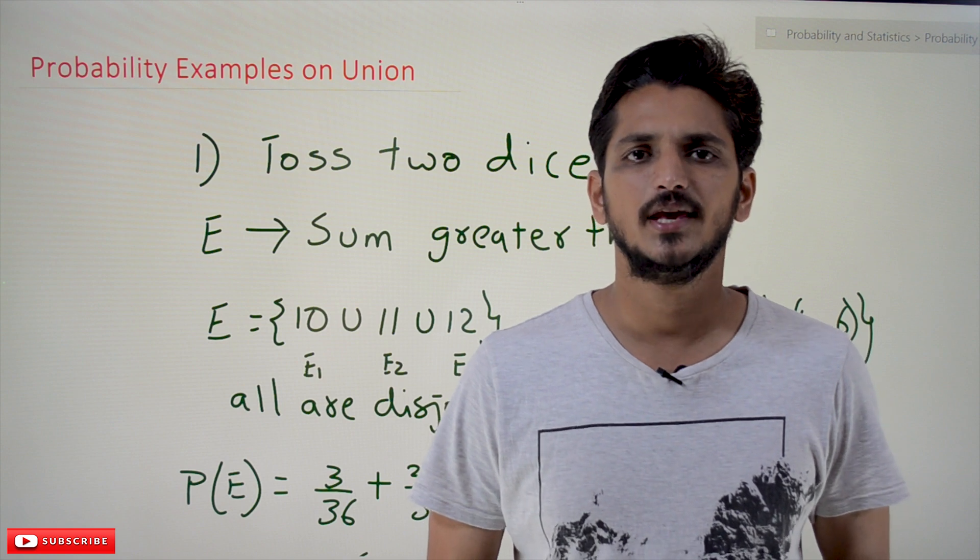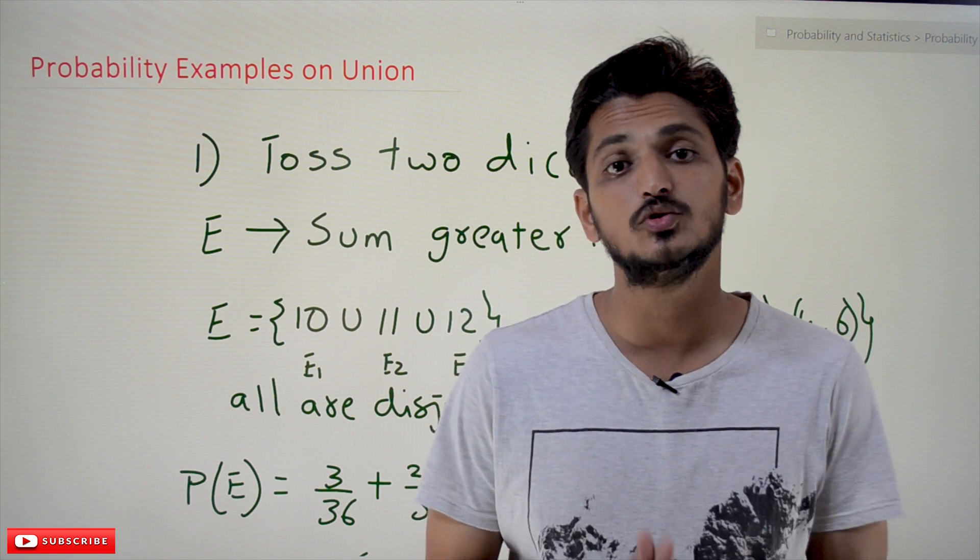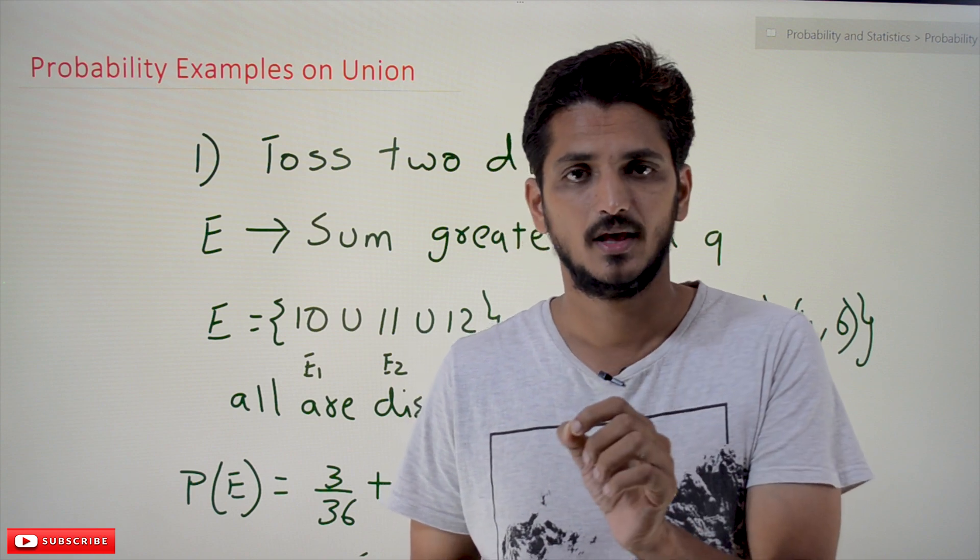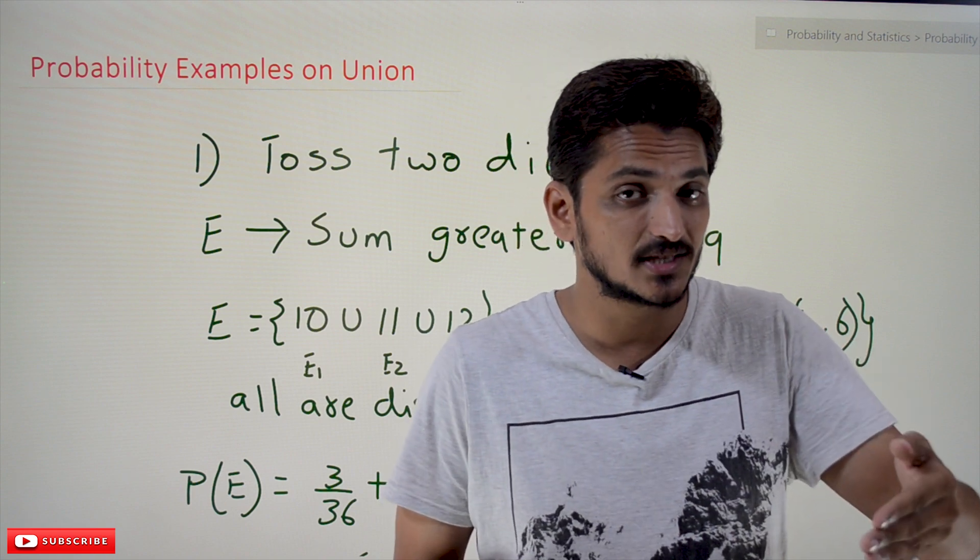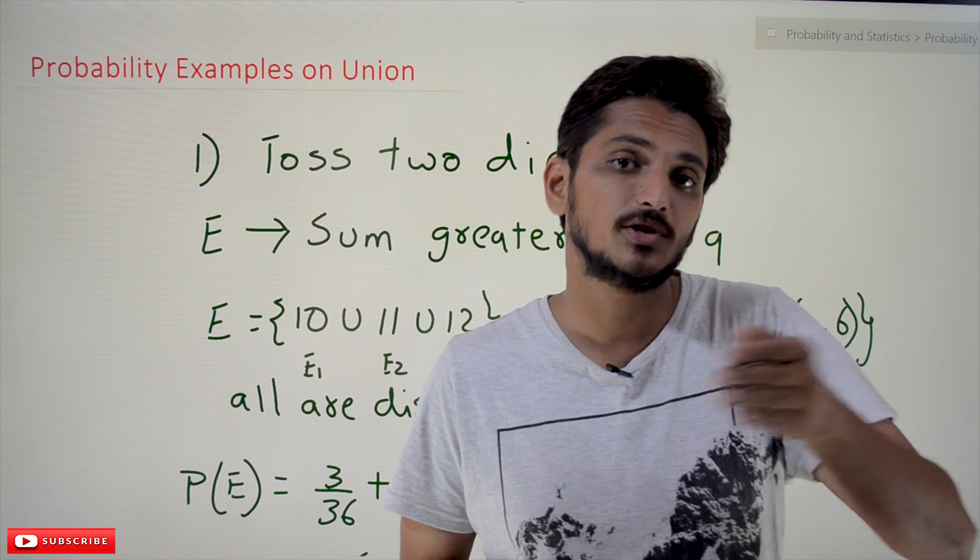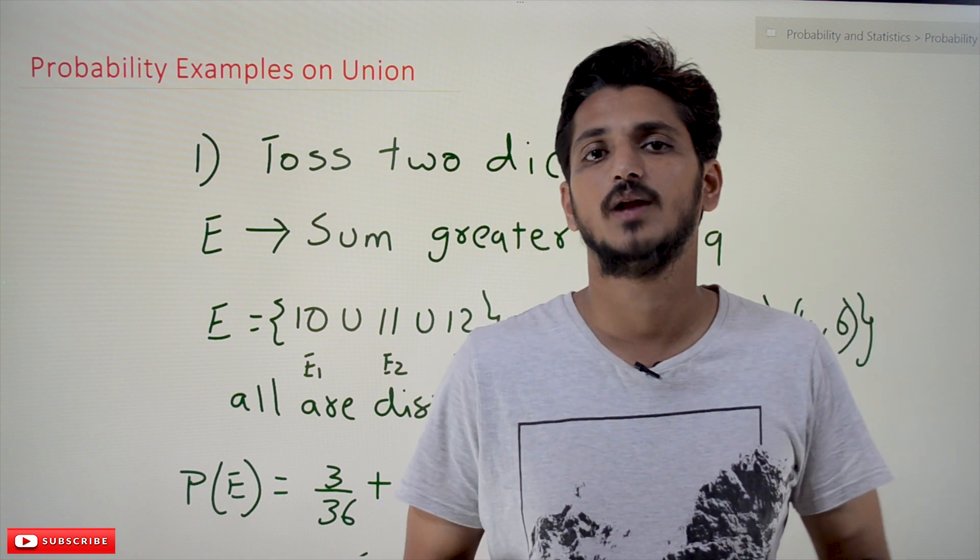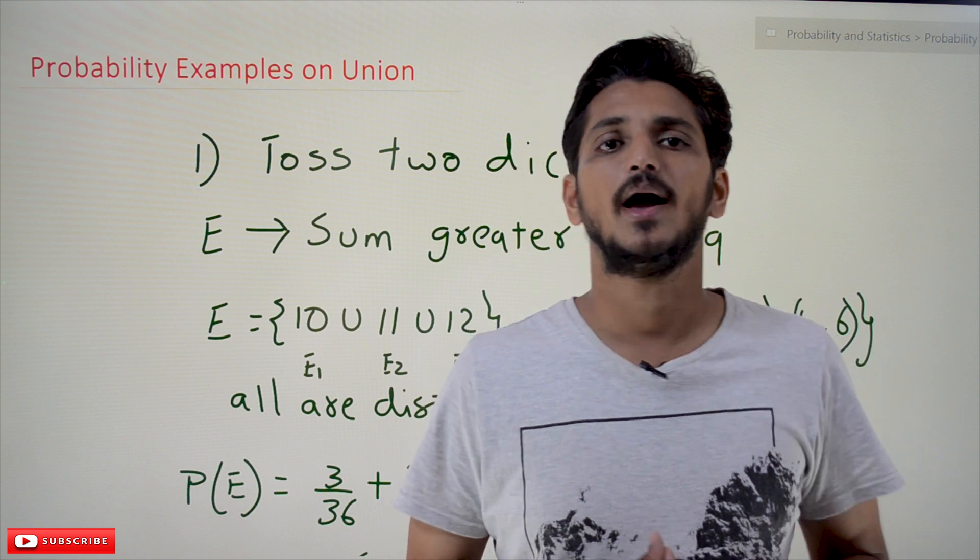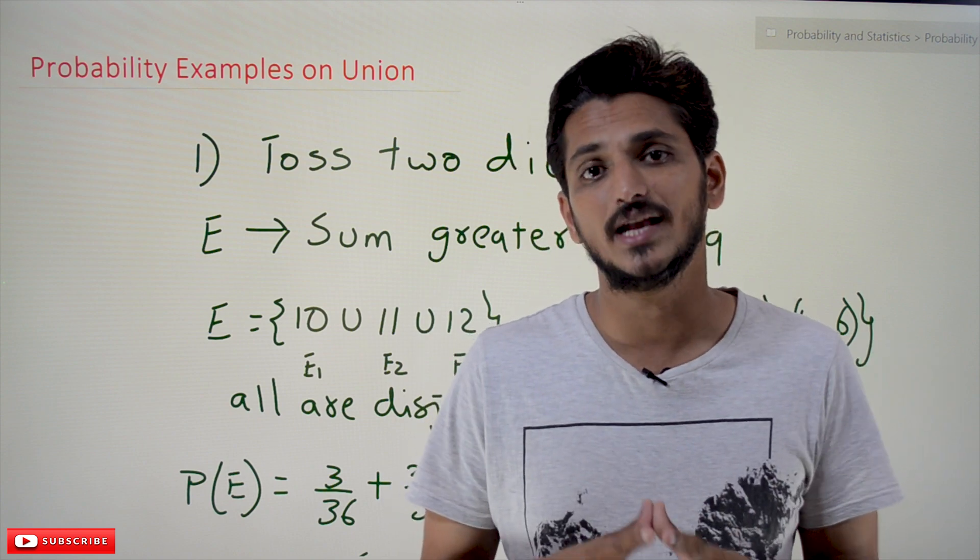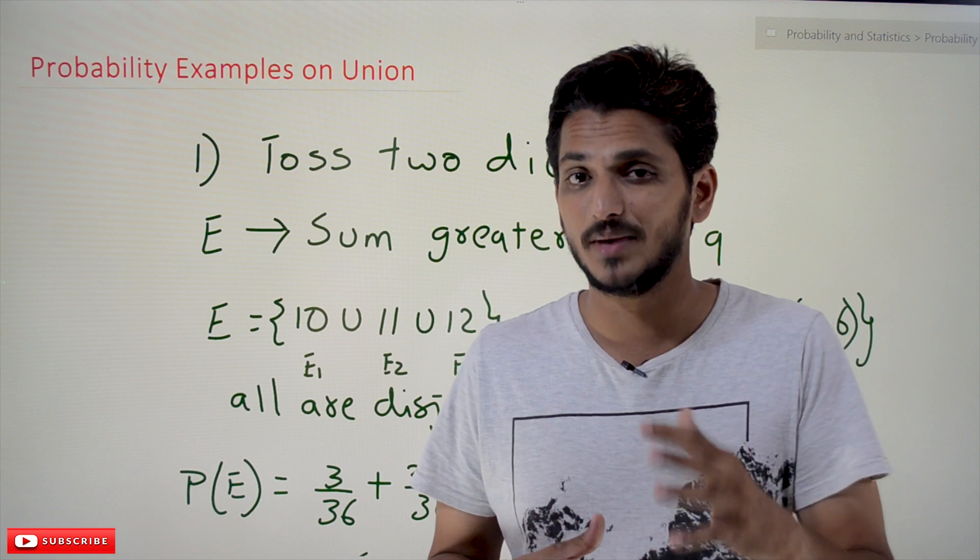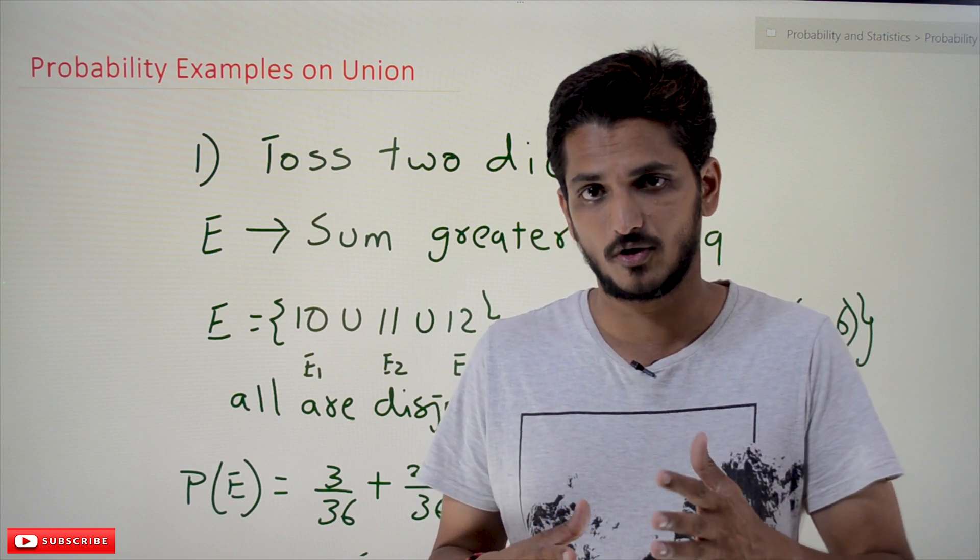Hi, welcome to Learning Monkey. I am Raghu. In this class we'll do practice examples on the formula of E union. In the previous class we clearly discussed the formula and axioms of probability. We explained the formula. Please watch that class and come back here. The link for the playlist is provided in the description below. Based on the assumption that you already have the basic understanding of our previous classes, the explanation is provided here.